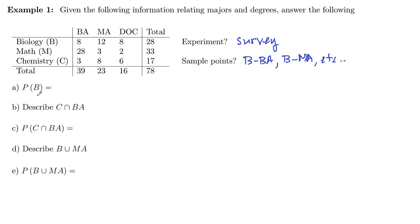So we want to know what is the probability of B, which is biology majors. Biology majors could have a BA, MA, or a doctorate. So those are the sample points that are inside of B, so we add their probabilities. This is going to be the probability of biology with a BA, plus probability of biology major got an MA, plus probability of biology major got a doctorate.